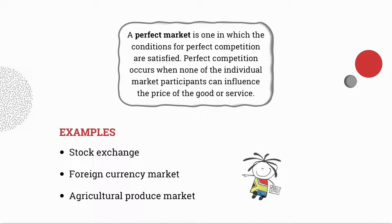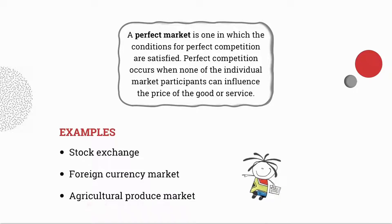There are three examples of the perfect market. The first is the stock exchange, where the value of a stock or share is determined through the interaction of demand and supply. The second is the foreign currency market, also known as the forex market, where the value of free-floating rates of exchange is determined through the interaction of demand and supply. And the last one is the agricultural produce market, because there are so many suppliers within this particular market.